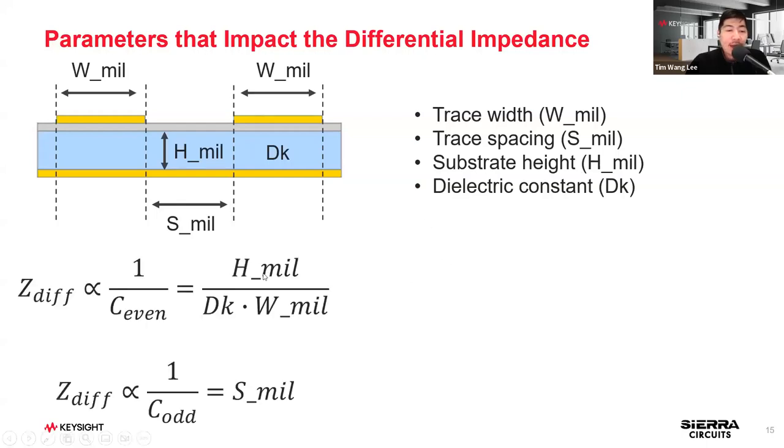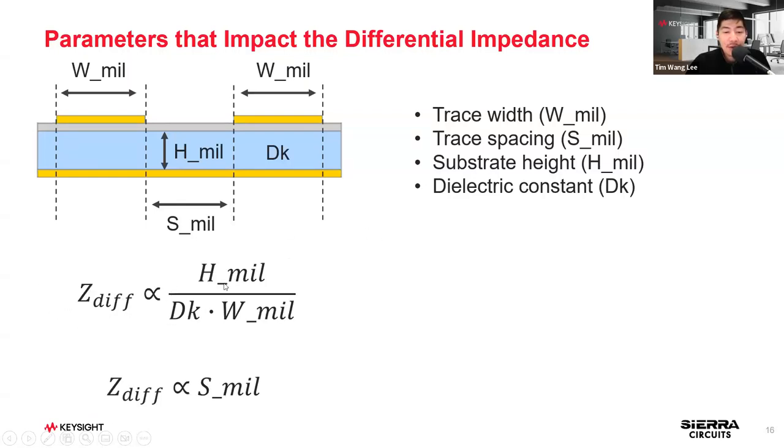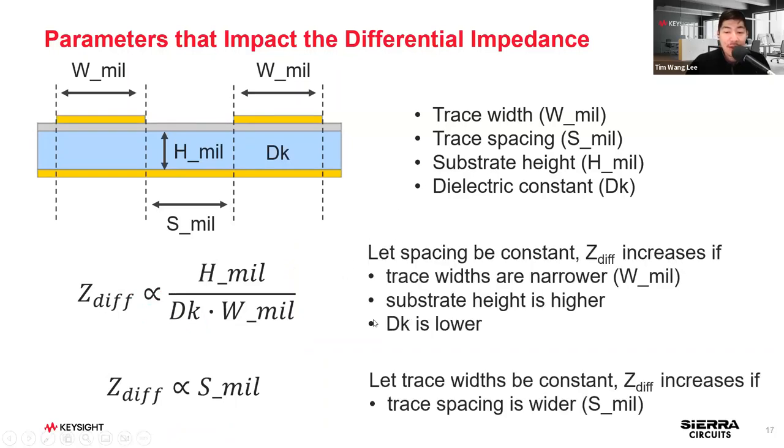Differential impedance is proportional to substrate height over the dielectric constant and width. We have width, spacing, substrate height, and dielectric constant. I wrote down some equations here. The differential impedance Z_diff is proportional to H_mil over Dk times W_mil, and Z_diff is proportional to 1 over C_odd equals S_mil. What this means is that if we increase the substrate height, the differential impedance would increase. If we decrease the spacing, the differential impedance would decrease. And the same way, if we decrease the width since it's inverse proportional, the impedance would increase. If we decrease the dielectric constant, the differential impedance would increase.